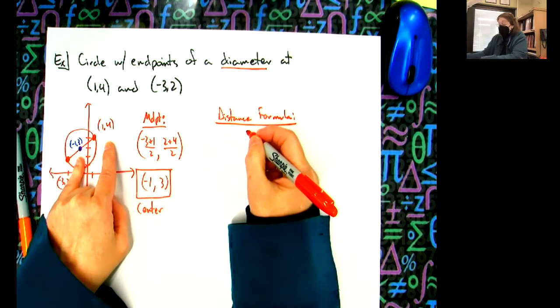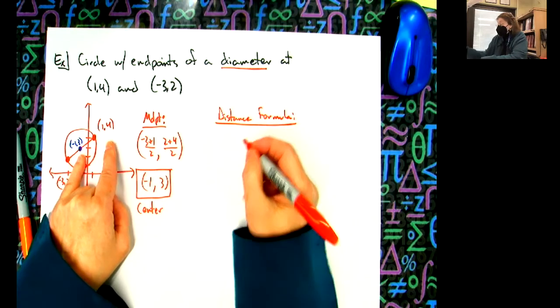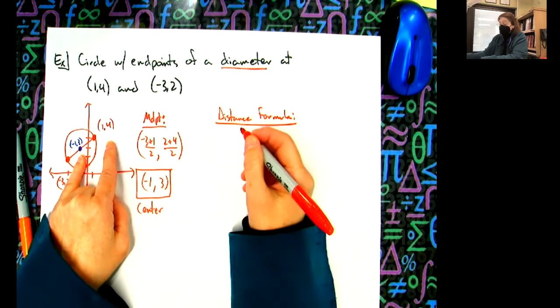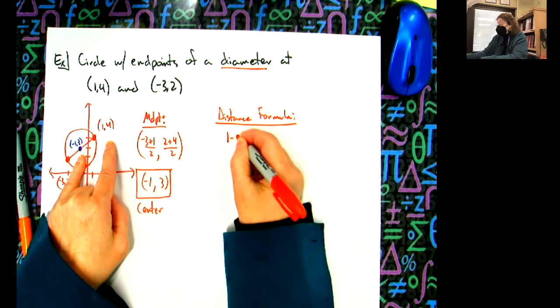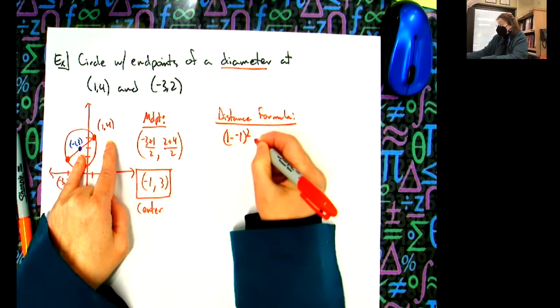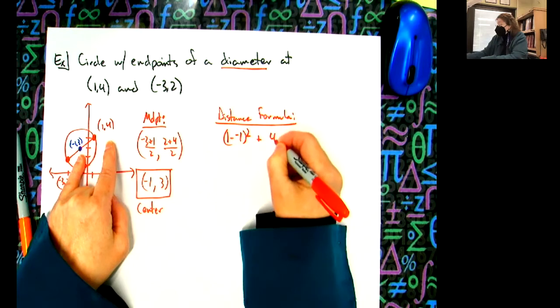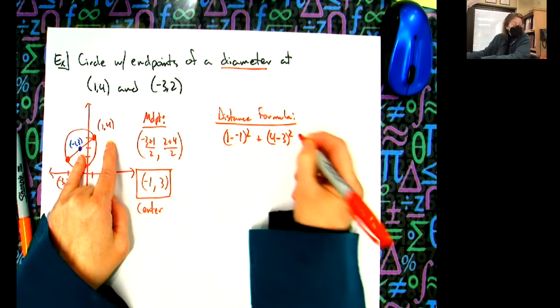Let's see, I'm going to use these two, you can use whichever two you want. Somebody else use the other two so that way we can check and make sure I'm not making a mistake here. (1-(-1))^2 + (4-3)^2... am I doing the distance formula right? Square root...